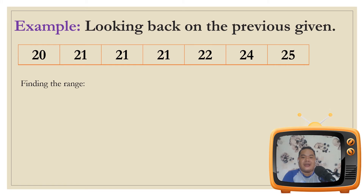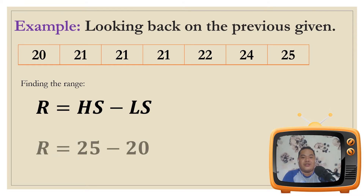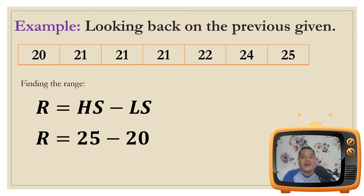Looking back on the previous data set: 20, 21, 21, 21, 22, 24, 25. Finding the range, we use the formula R equals highest score minus the lowest score. The highest score is 25 and the lowest score is 20, therefore 25 minus 20 gives us a range of 5.